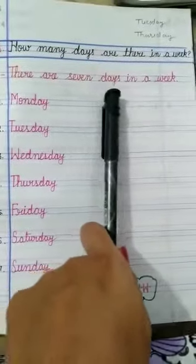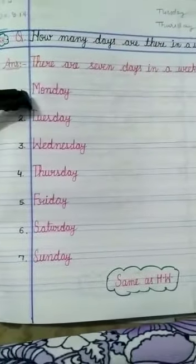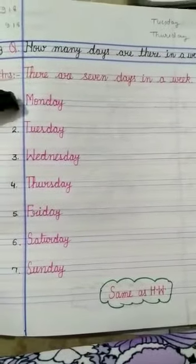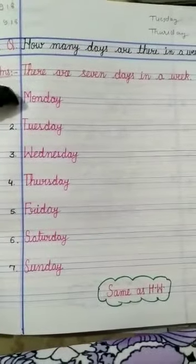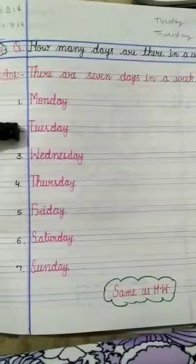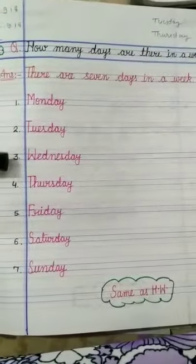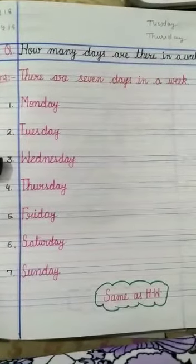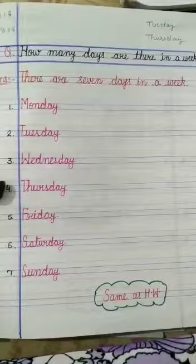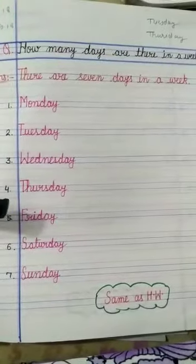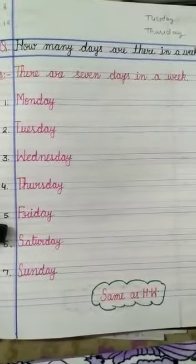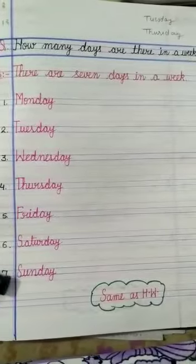So let us read the names. Monday — like today is Monday, so the first day of the week is Monday. Second, Tuesday. Then it comes Wednesday. After Wednesday, Thursday. Then Friday, Saturday, and Sunday.